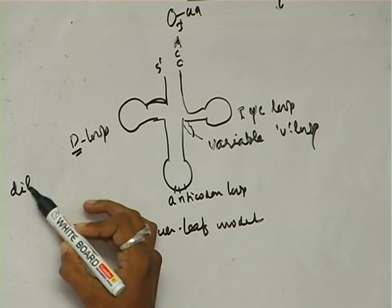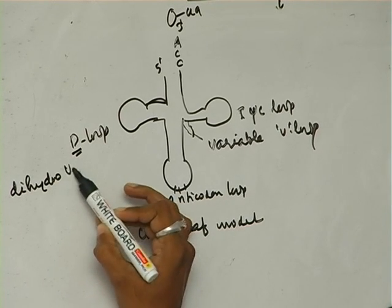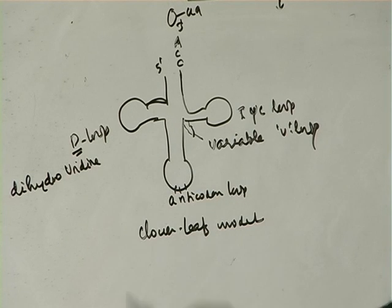dihydrouridine. So the D loop contains this modified base. It is called the D loop.